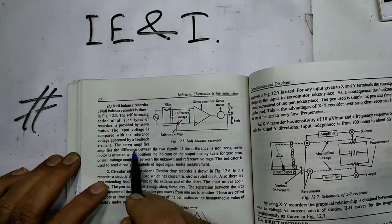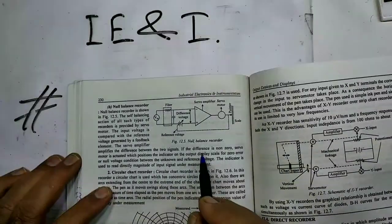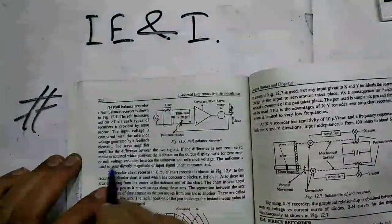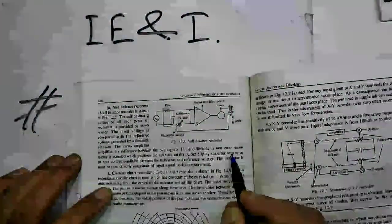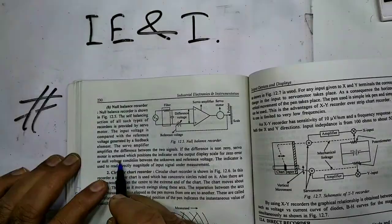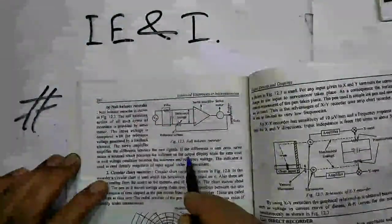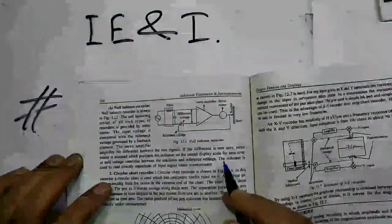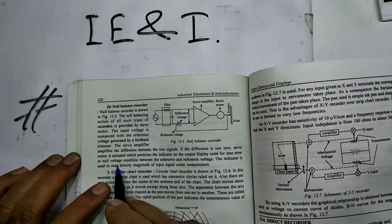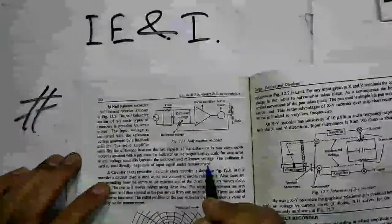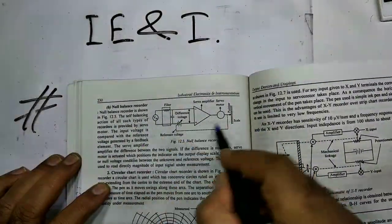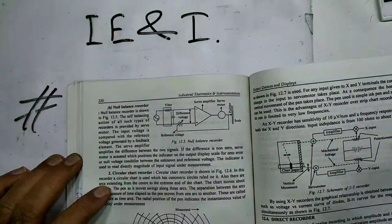If the difference is non-zero, servo motor is actuated which positions the indicator on the output display scale for zero error or null voltage condition between the unknown and the reference voltage. The indicator is used to read directly magnitude of the input signal under measurement. This is the basic system of null balance recorder.